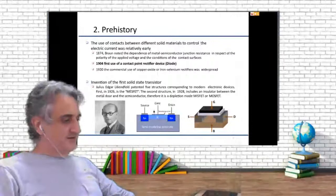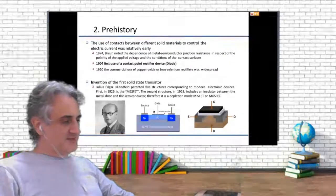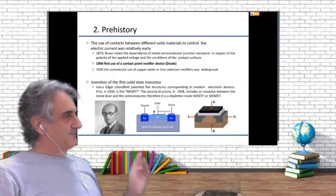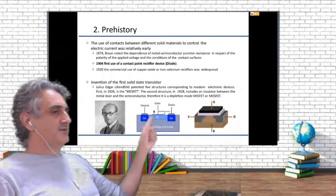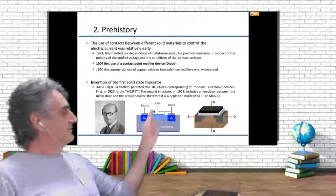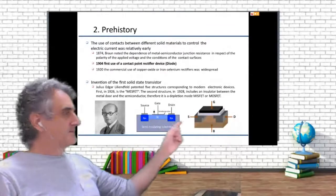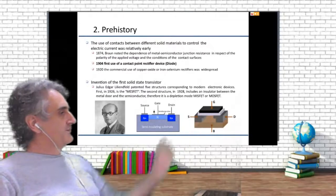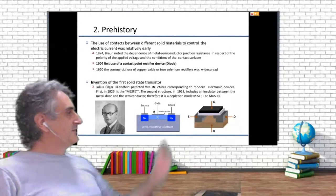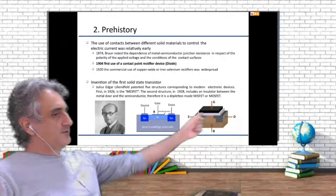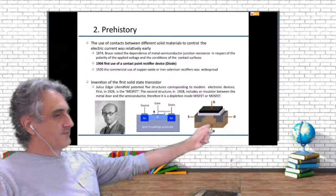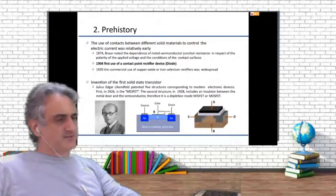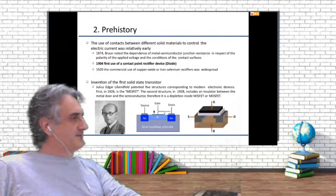These are called the emitter and the drain — it's the same idea. The problem is that this device has power flowing through the gate. Then he patented another device, more similar to the MOSFET we are using now, because it included an insulator between the gate and the channel. So there was no current flowing through the gate, which is much more interesting because you don't dissipate power in this case.